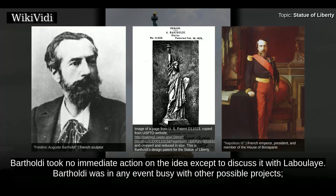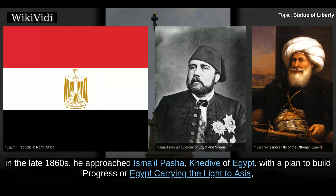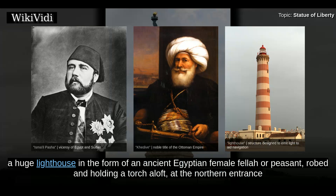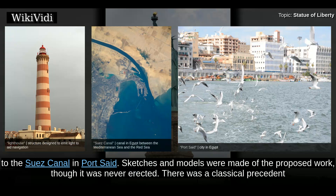Bartholdi was in any event busy with other possible projects. In the late 1860s, he approached Ismail Pasha, Khedive of Egypt, with a plan to build 'Progress' or 'Egypt Carrying the Light to Asia,' a huge lighthouse in the form of an ancient Egyptian female fellah or peasant, robed and holding a torch aloft, at the northern entrance to the Suez Canal in Port Said. Sketches and models were made of the proposed work, though it was never erected.